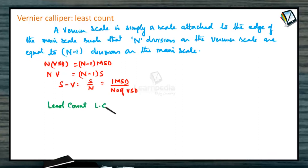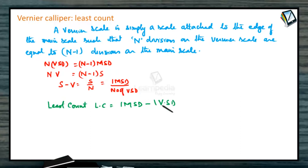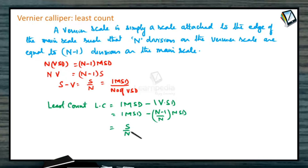So, least count equals 1 main scale division minus 1 vernier scale division. Since 1 vernier scale division equals (n − 1)/n of a main scale division, this gives S − (n−1)/n × S = S/n. Vernier coincidence is a simple number only. Finally, the least count of the vernier caliper is the vernier constant.